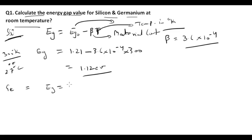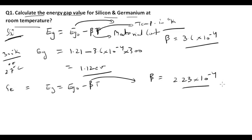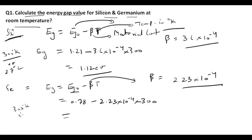Applying the same formula for germanium: Eg = Eg₀ − β·T. Here beta for germanium is 2.23 × 10⁻⁴, and Eg₀ = 0.78. So Eg = 0.78 − (2.23 × 10⁻⁴ × 300). On solving, the energy gap at room temperature for germanium comes out to be 0.72 eV.